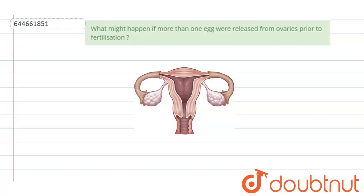The question given here is: what might happen if more than one egg were released from the ovaries prior to fertilization? We need to learn that normally only one ovulation can take place, that is, only one egg can be released from the ovaries.